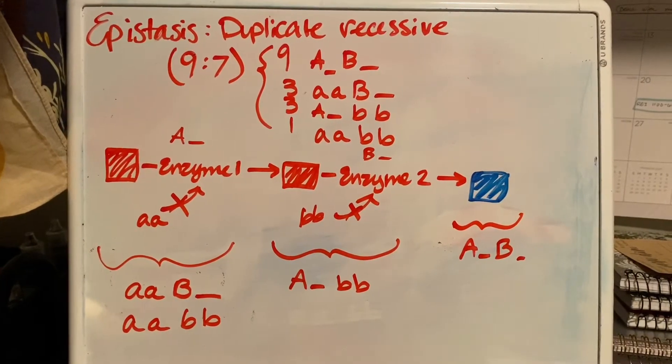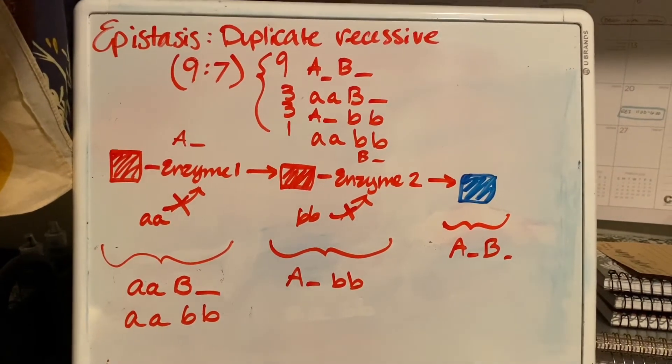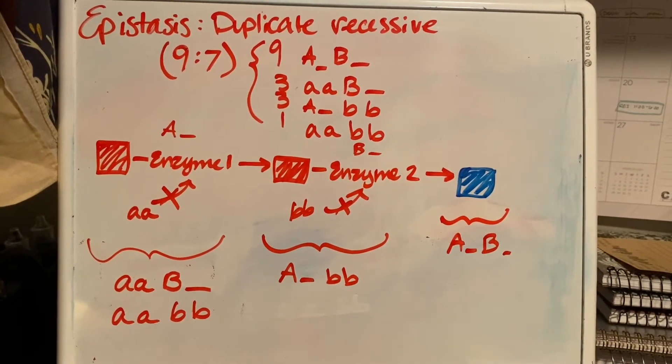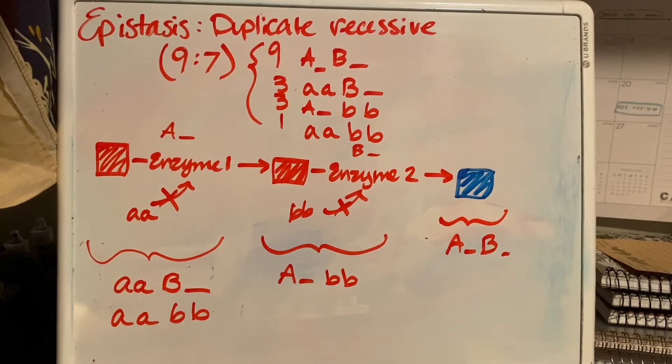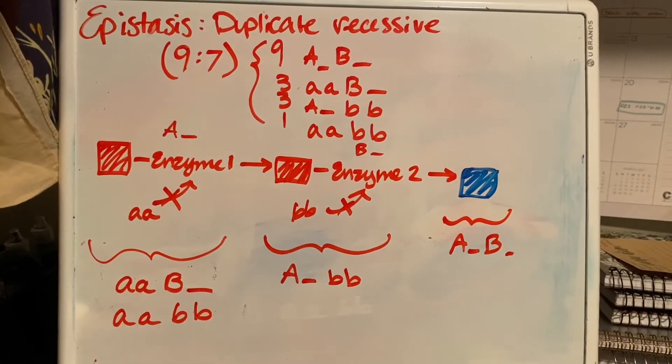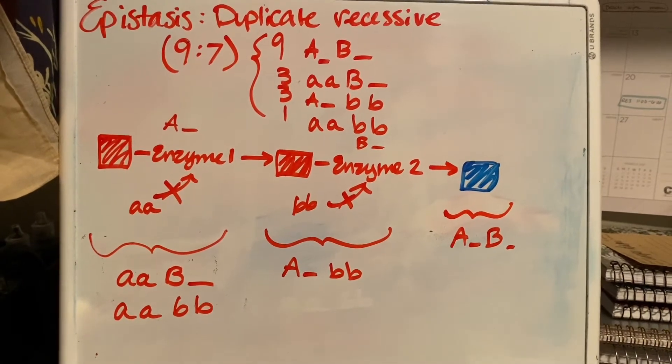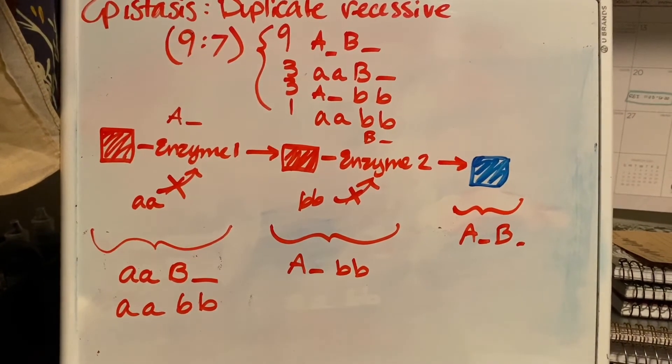Here's our expected distribution of the duplicate recessive. We're going to have 9 to 7, 9 being color filled, and then 7 being colorless. So in our pathway, this is kind of where the distribution lies.